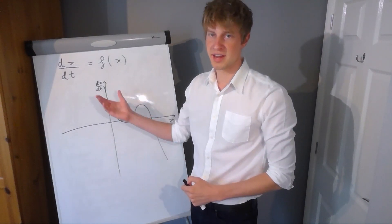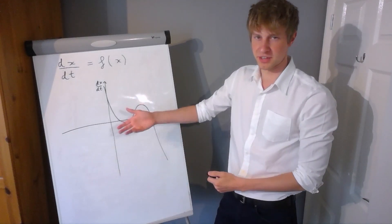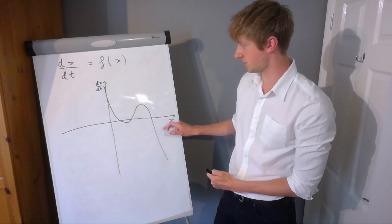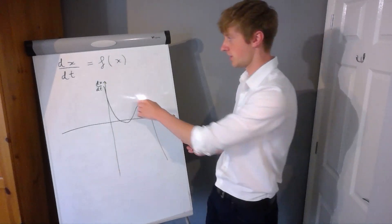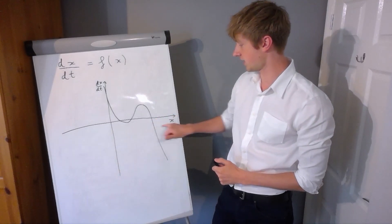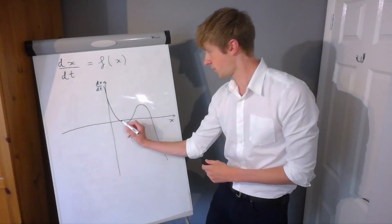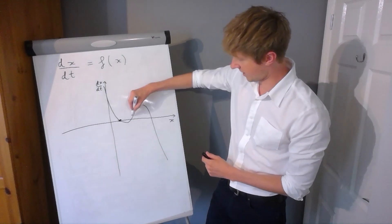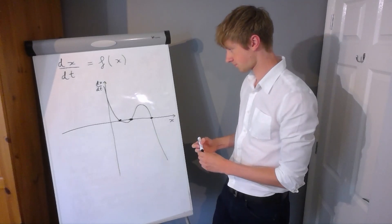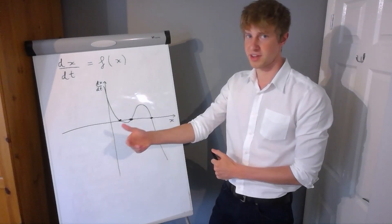Suppose we know the dynamics of the system in one dimension. It might look something like this — this function would be some kind of cubic equation that intersects the x-axis in several different places. Here I've plotted x, which is our variable, against dx/dt, which is the rate of change. So if it's a place where it's intersecting the x-axis then that's a place where the rate of change is zero. For this particular graph there are three places where the function intersects the rate-of-change-equals-zero line. These are called fixed points.